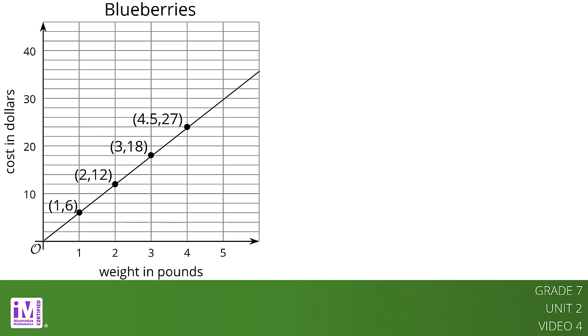Sometimes it makes sense to connect the points with a line, and sometimes it doesn't. We could buy, for example, 4.5 pounds of blueberries or 1.875 pounds of blueberries, so all the points in between the whole numbers make sense in this situation. So any point on the line is meaningful.